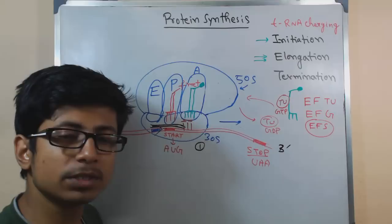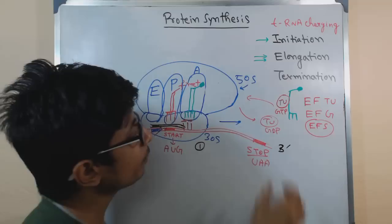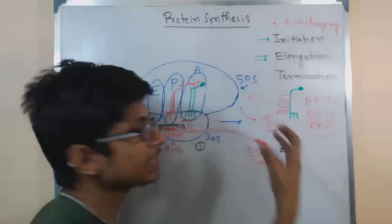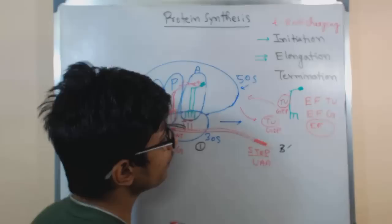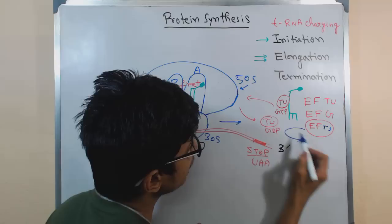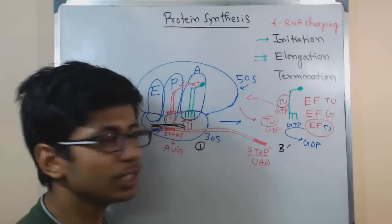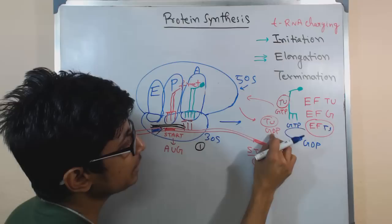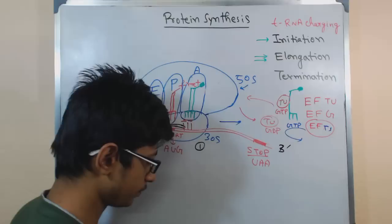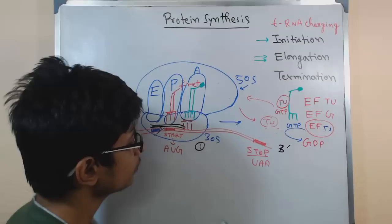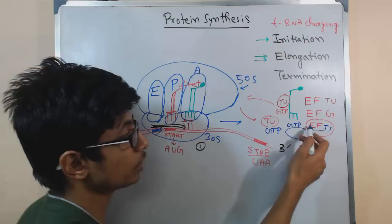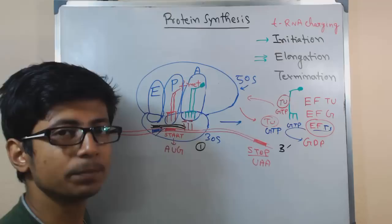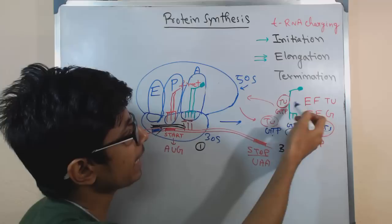All the EF-Tu required to bring a charged tRNA needs GTP, but after the reaction everyone now has GDP. This is where EF-Ts comes in. EF-Ts helps in recycling GTP instead of GDP — EF-Ts provides GTP to EF-Tu and the GDP that was present in EF-Tu is released. This regulates the cycle of GTP-EF-Tu and GDP-EF-Tu. Now again this EF-Tu is with GTP, so it can attach with another tRNA and bring it to the A site. That is how the cycle continues.